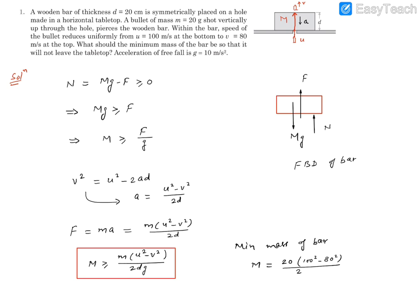u² = 100² and v² = 80². Dividing by 2d where d = 20 centimeters = 0.2 meters, times g = 10. The answer will be in grams because we used m in grams.